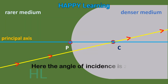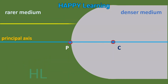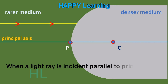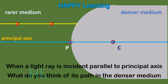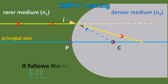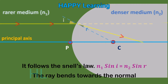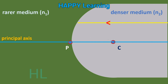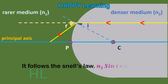Here the angle of incidence is 0 and the angle of refraction is also 0. When a light ray passes parallel to the principal axis, what do you think of its path in the denser medium? The light ray follows Snell's law: n1 sin i = n2 sin r. The ray bends towards the normal. Now when the light ray passes from denser to rarer, the ray follows Snell's law: n2 sin i = n1 sin r. The ray bends away from the normal.